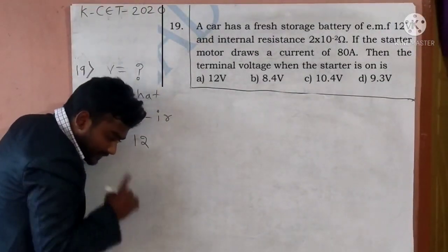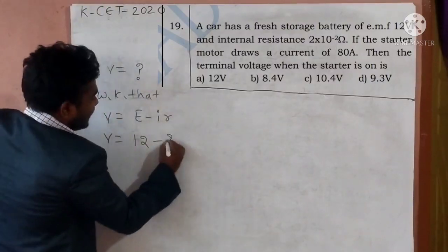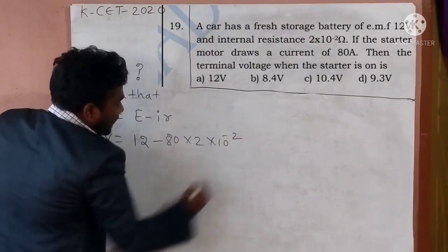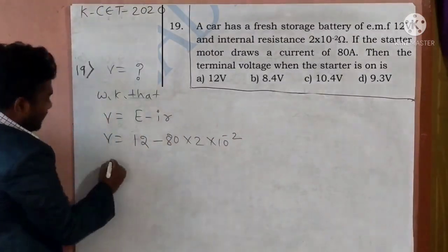The EMF is 12V. The current is 80A. It is the internal resistance, 2 into 10 to the power minus 2 ohm.